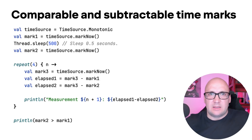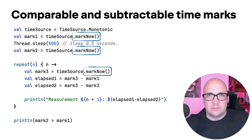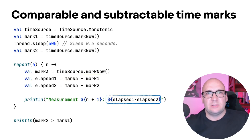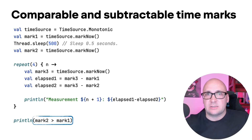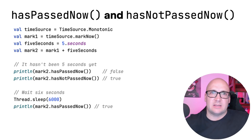The time API is getting stable. The ComparableTimeMark and SubtractableTimeMark were introduced to precisely pin moments of time in program execution, which is especially useful when you need to compare results. Two time marks are created at the beginning of a code snippet, and the elapsed time difference is continuously calculated in a loop. The difference between elapsed time intervals remains constant throughout execution. Since time marks are now comparable, you can validate if one time mark was captured later than another. The hasPassedNow and hasNotPassedNow functions are useful for checking if a desired time interval has passed.